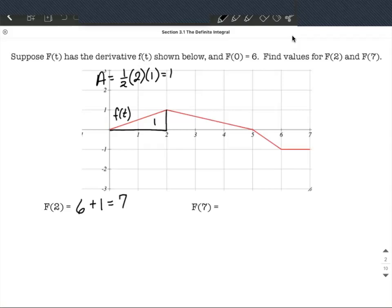What about F of 7? Well, for F of 7, we know we start at 6 also, but then we may increase or decrease by some amount. We have to get all the way over to 7 and do all these computations along the way to calculate the area between the derivative's graph that we're given and the x-axis, or I guess t-axis in this case. So we've already done the first one.